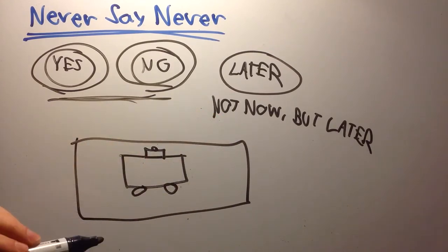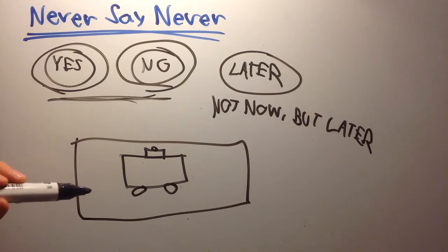And a good quote from Mark Twain describes why this is: to promise not to do a thing is the surest way in the world to make a body want to go and do that very thing.